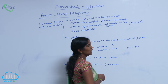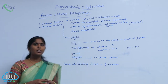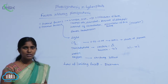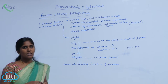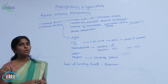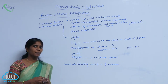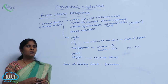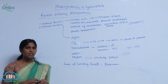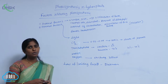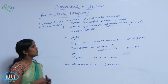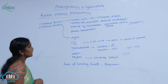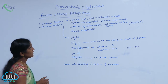Accumulation of end products is another internal factor. The end products of photosynthesis are carbohydrates and oxygen. If carbohydrates accumulate more in the chloroplasts or cytoplasm of the cell, they inhibit the photosynthetic reaction. This is called feedback inhibition or end product inhibition.